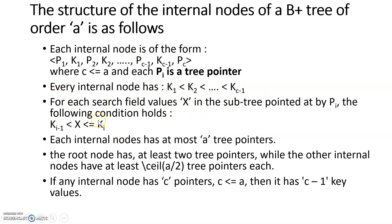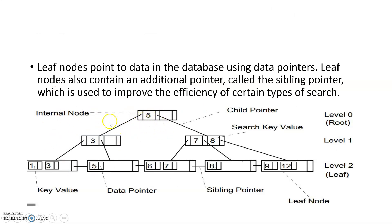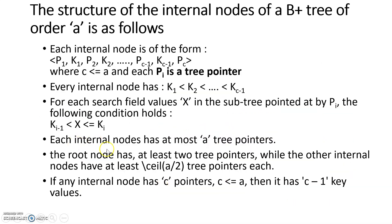The keys in internal nodes are arranged so that searching follows a specific sequence. For example, if I want to search something less than 5, I go to the left subtree; if greater than 5, I go to the right subtree. The rules are: an internal node has at most 'a' tree pointers since it is of order 'a'; the root node has at least two tree pointers; all internal nodes except leaf nodes should have at least ⌈a/2⌉ tree pointers; and if a node has 'c' pointers, it should have c−1 keys.